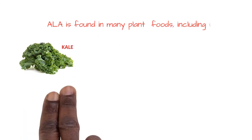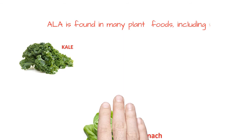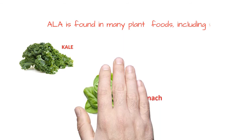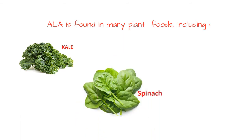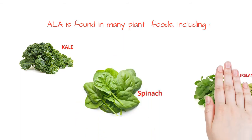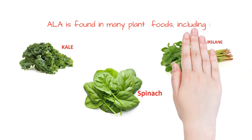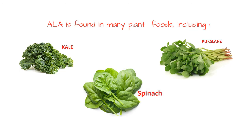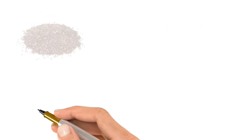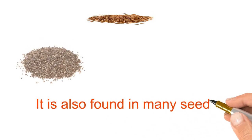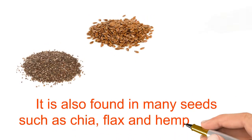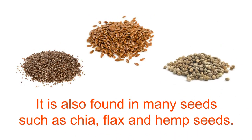including kale, spinach, and purslane. ALA is also found in many seeds such as chia, flax, and hemp seeds.